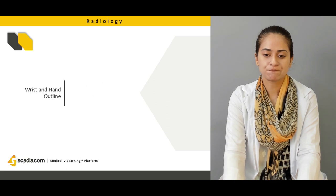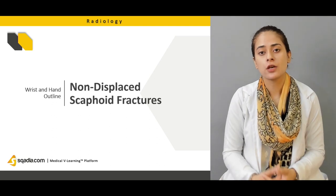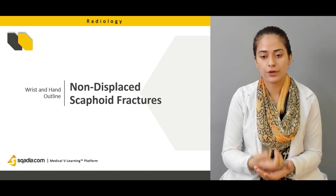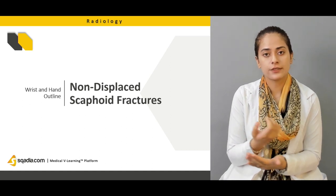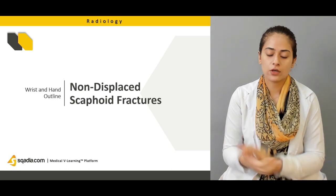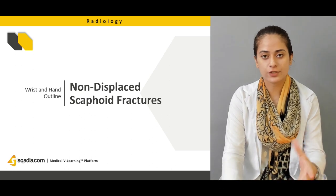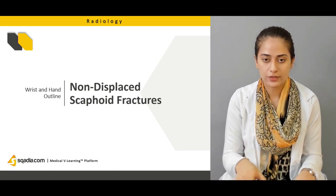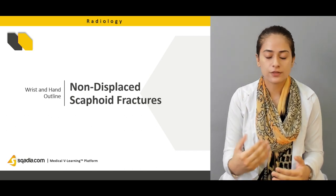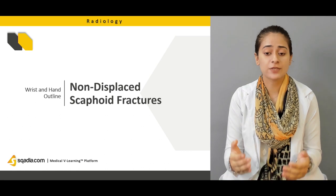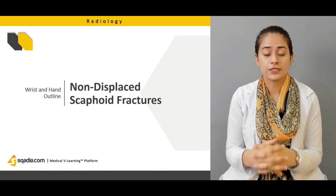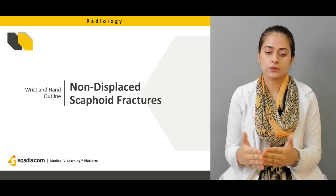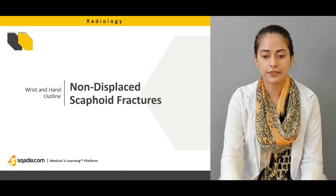In acute conditions, we'll discuss non-displaced scaphoid fractures, which are due to falls on an outstretched hand or when something hits on the scaphoid area of the wrist. Scaphoid is a carpal bone. We'll discuss how it is visualized on x-rays and how its fractures are visible on x-rays. Sometimes it's not easy to detect scaphoid fractures and you may need other modalities like MRI or CT scan.